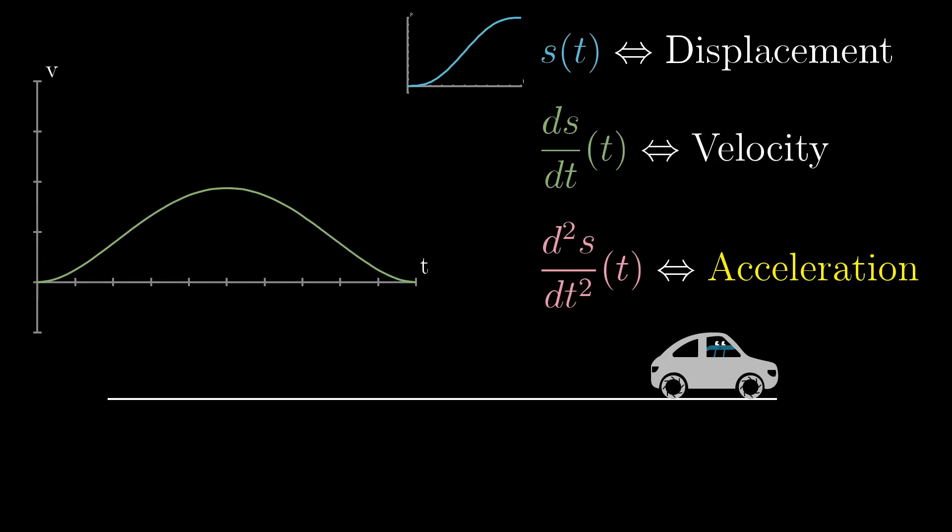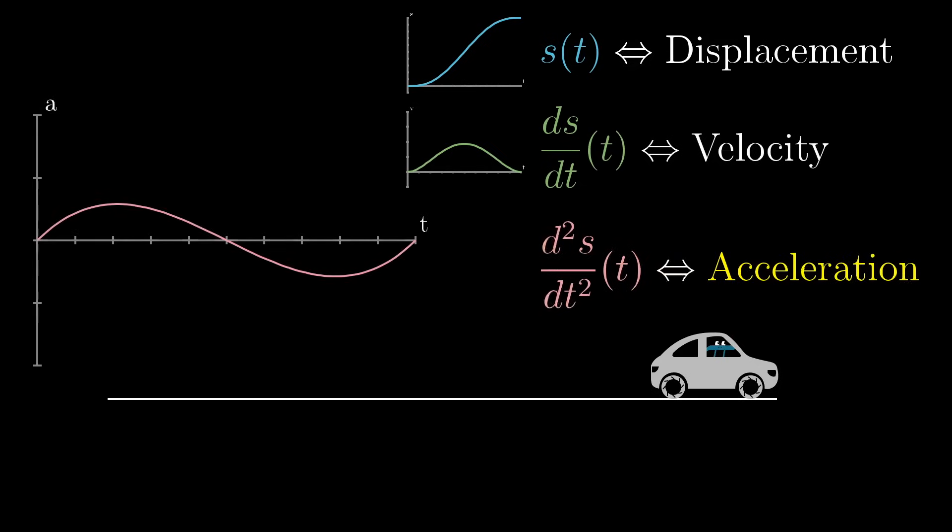Then its derivative tells you velocity at each point in time, right? For example, the graph might look like this bump, increasing up to some maximum, and then decreasing back to zero. So the second derivative tells you the rate of change for the velocity, which is the acceleration at each point in time.